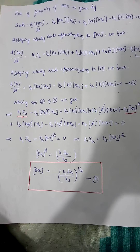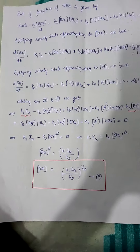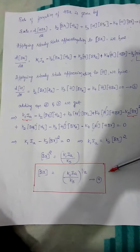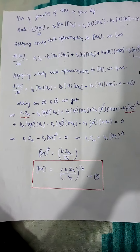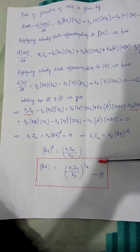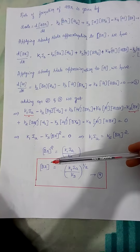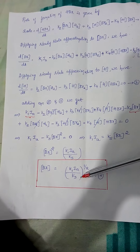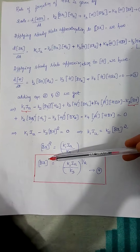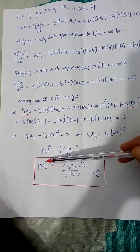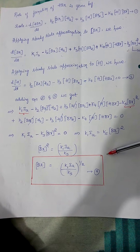Good morning dear students, I am Amrita. In the previous video, we already discussed the reaction kinetics of hydrogen bromide. Up to equation 4 we discussed in the previous video, and in this video we shall continue that discussion. The concentration of Br was derived as: [Br] = (K1·Ia / K5)^(1/2). This is equation 4, which we already discussed.